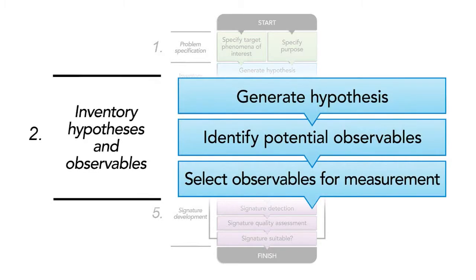The second phase starts to construct hypotheses about the target of our signature and identify the observables that help us distinguish between multiple hypotheses.